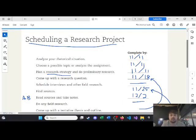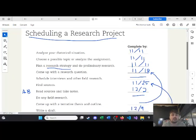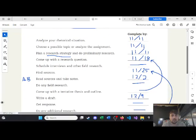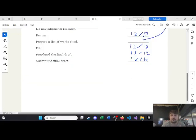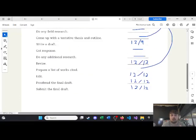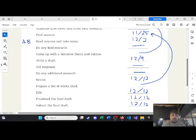So, you might break it down into a list like this and then give a complete by date. Obviously, the first thing is going to be close to the assignment date, so the date it was assigned. And the last thing, you're going to want to put near the deadline. So, we have here, submit the final draft. That's going to be basically the day of the deadline, or maybe a little before the deadline.